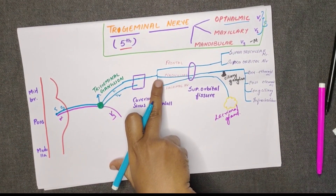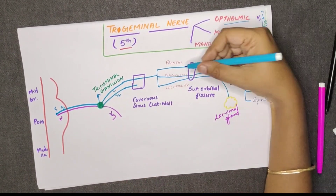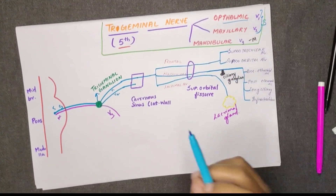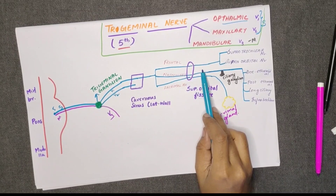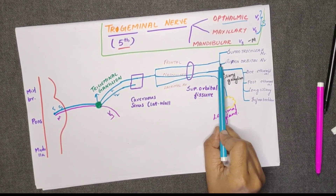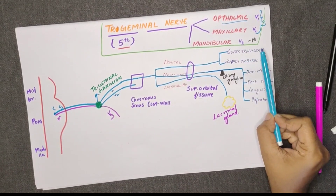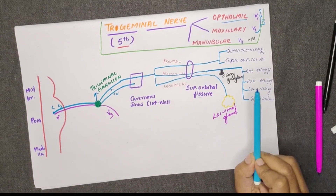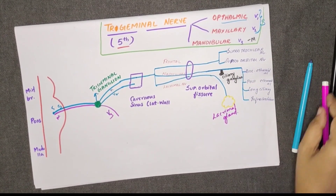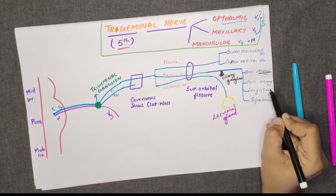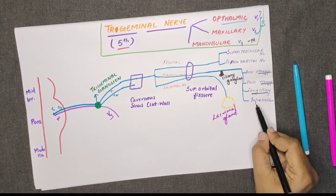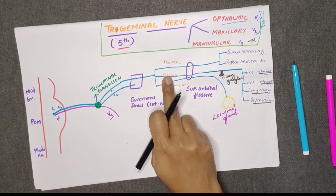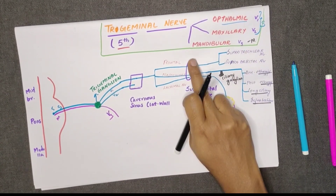In the ophthalmic nerve, three branches are given: the frontal branch, the nasociliary branch, and the lacrimal branch. All three pass through the superior orbital fissure. The frontal branch has two sub-branches: the supratrochlear nerve and the supraorbital nerve. The nasociliary branch has four sub-branches: anterior ethmoidal, posterior ethmoidal, long ciliary, and infratrochlear.